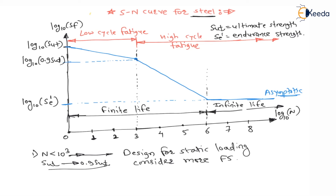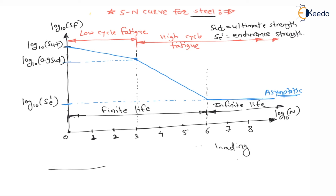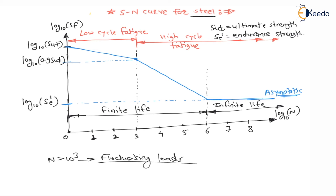Whenever a component fails after completing 1000 revolutions — high cycle fatigue — we have to design for fluctuating loads. For high cycle fatigue, design is based on fluctuating loading using the Soderberg line, Goodman line, and Gerber line.